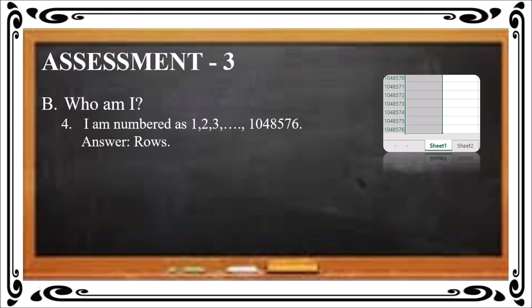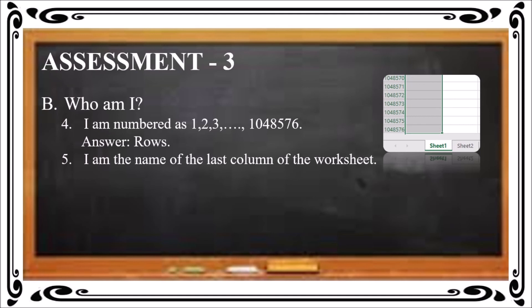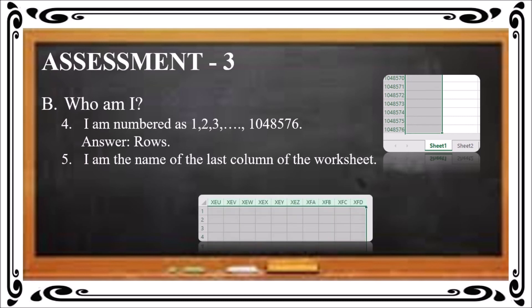Fifth Who am I — I am the name of the last column of the worksheet. Columns are named using alphabets starting from A, B, C up to Z, then AA onward. The name of the last column is XFD. The correct answer is XFD.